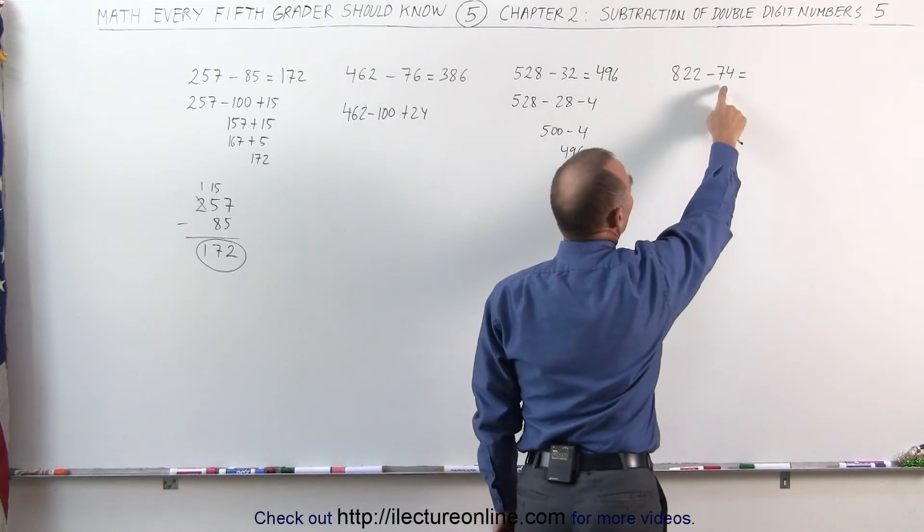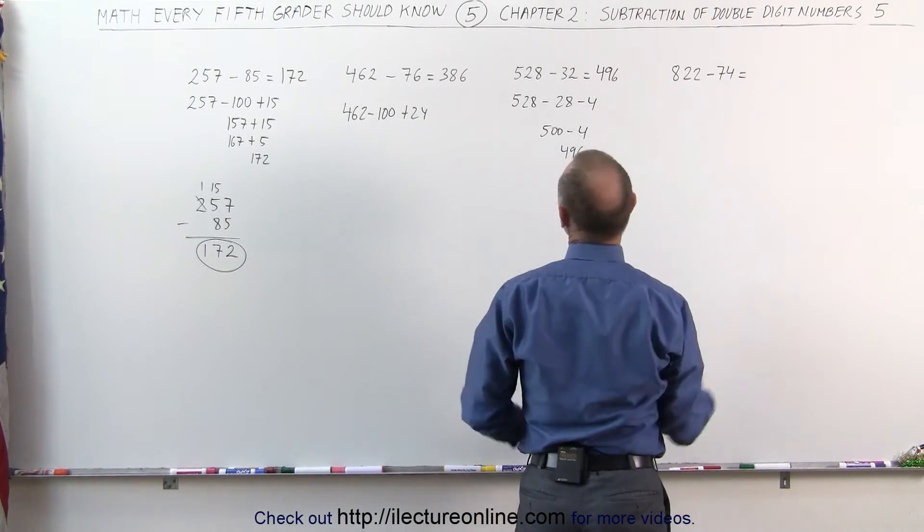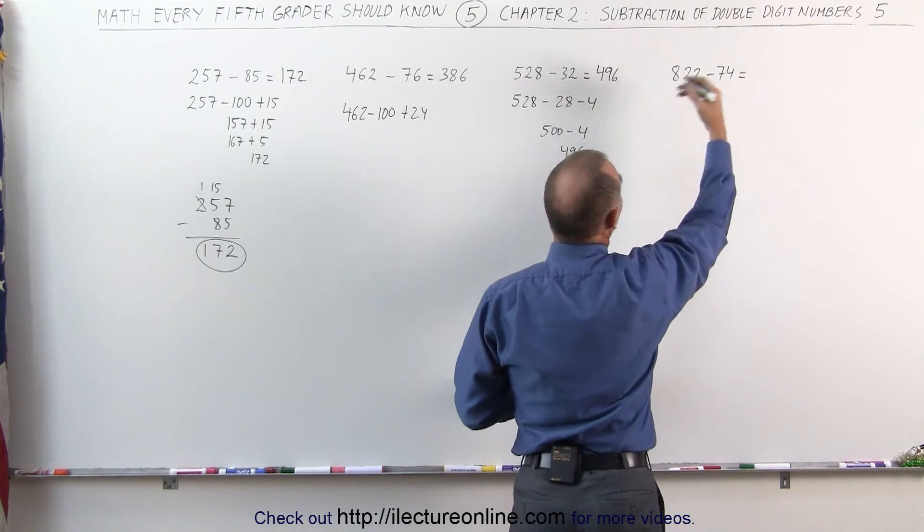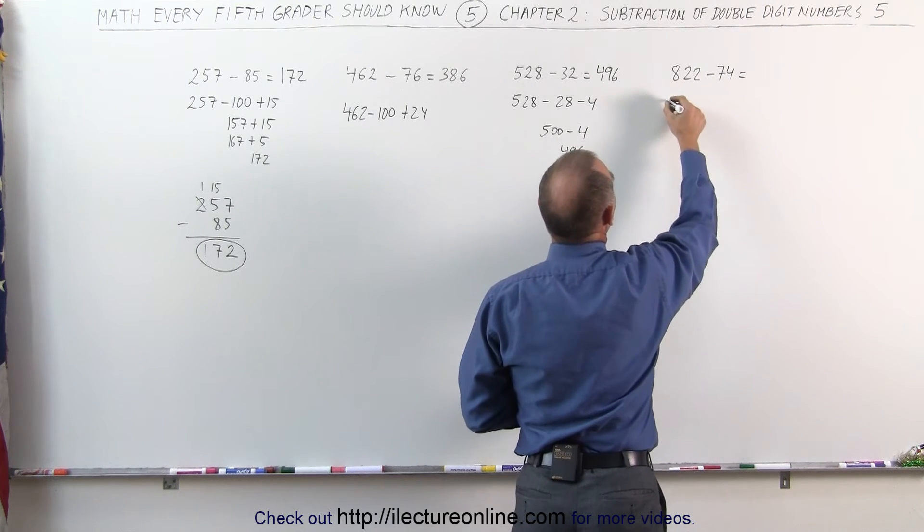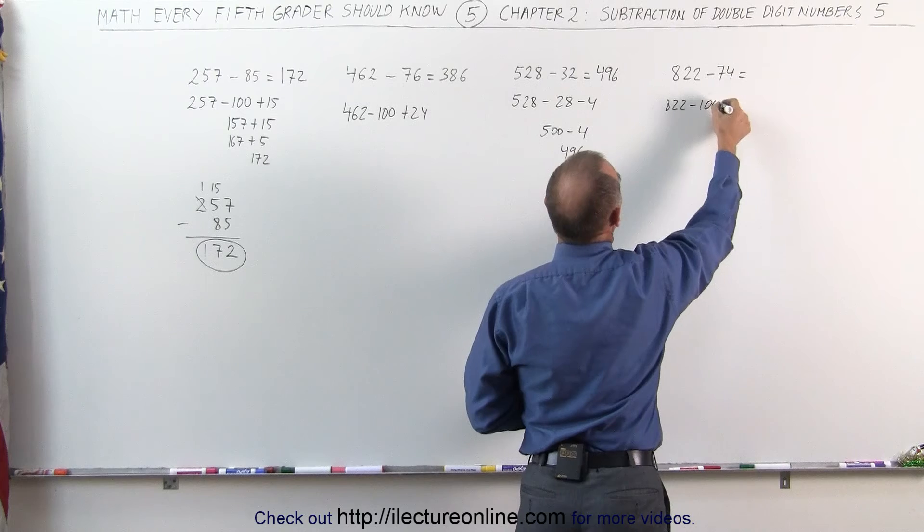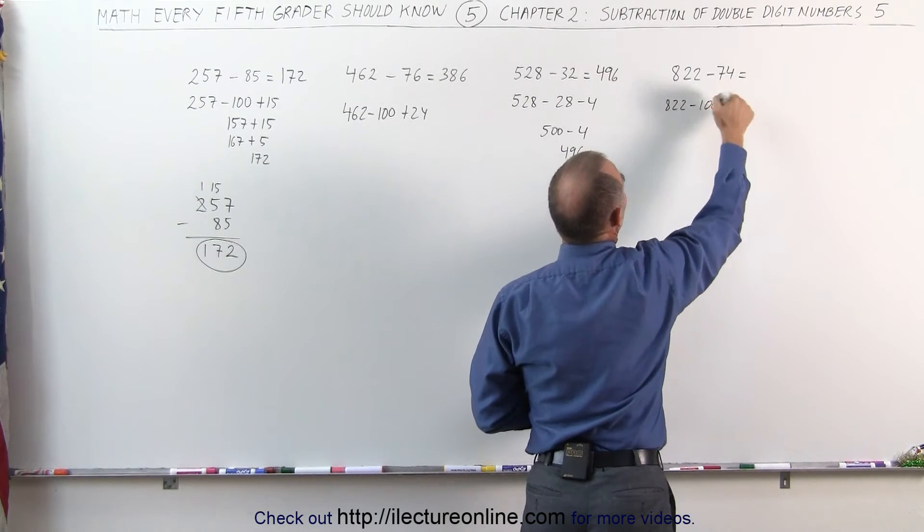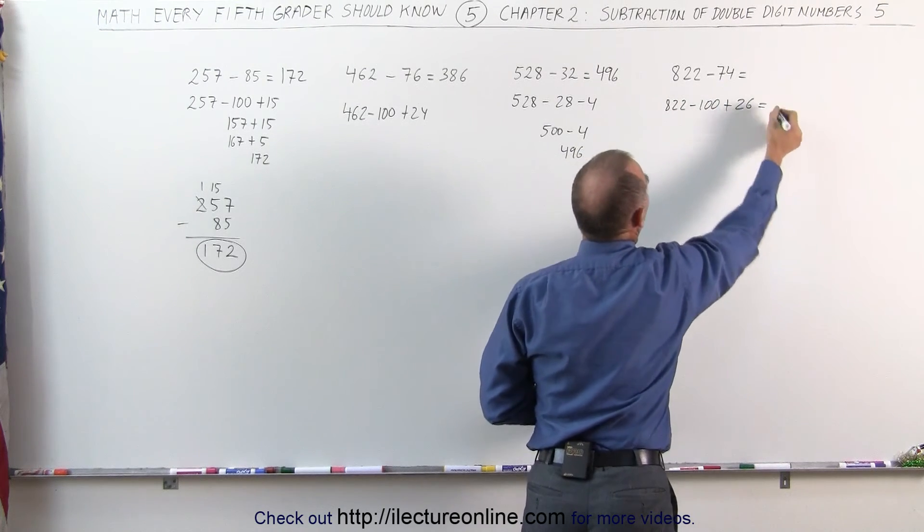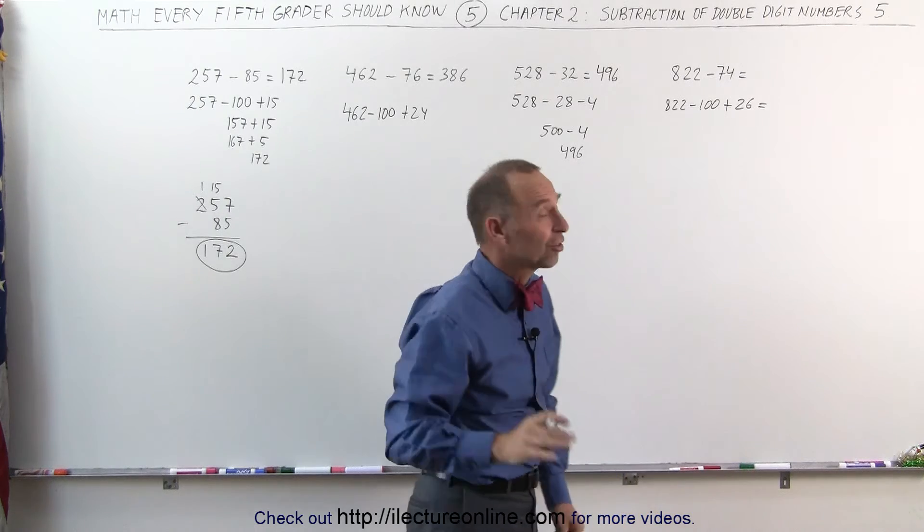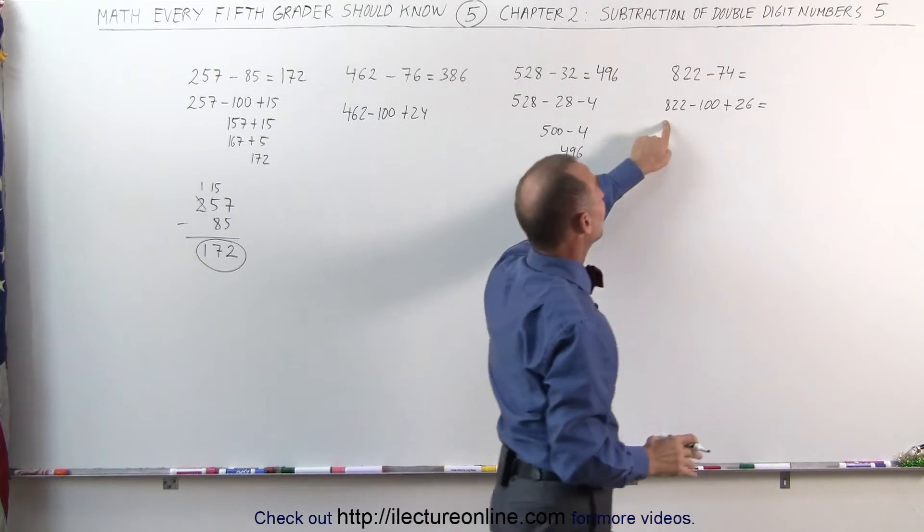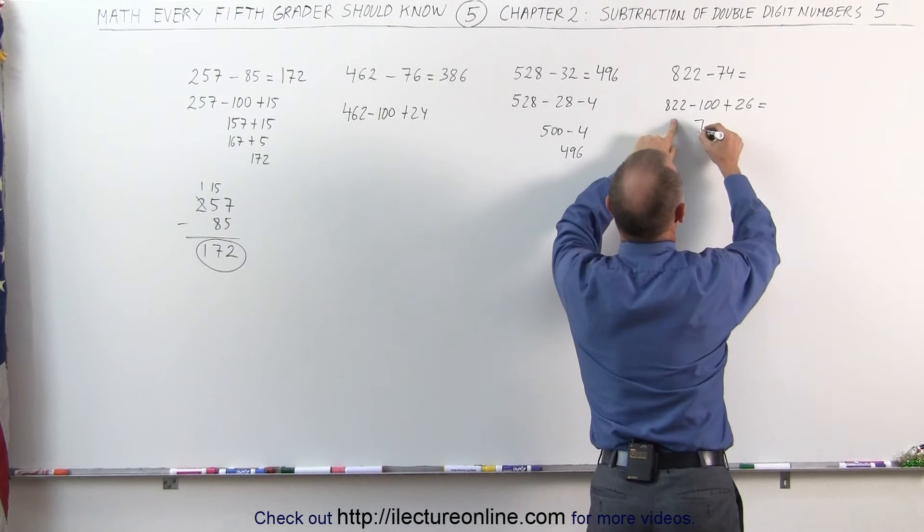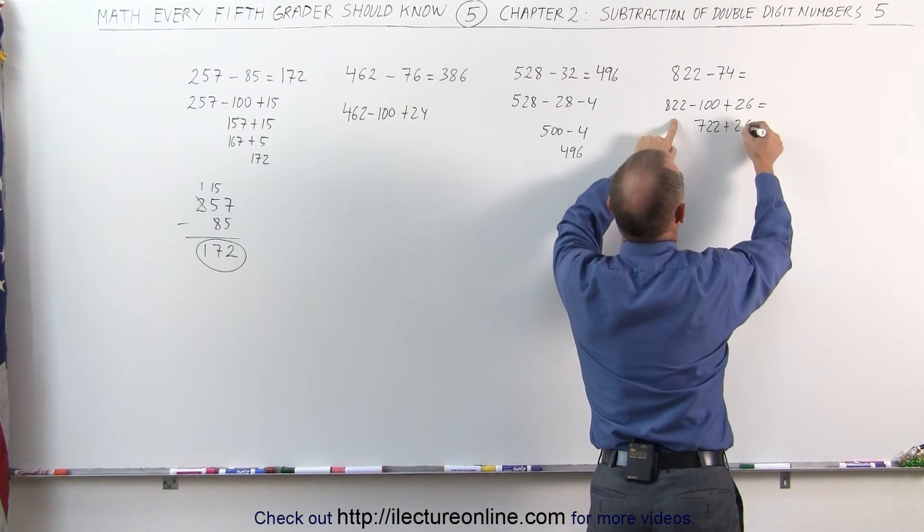But if the number is big like this, close to 100, then again I use a technique where I subtract 100 from it and then add the difference later. 822 minus 100 plus the difference here is 26, so I add another 26 to it because I subtracted 26 more than I should have. 822 minus 100 is 722, that becomes 722 plus 26.